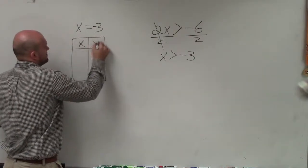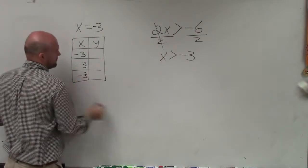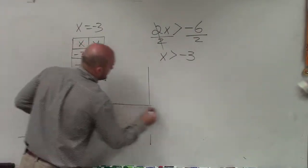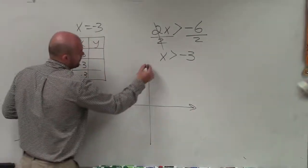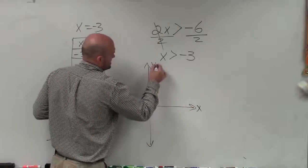When we're creating a table of values, we know that x is always going to equal negative 3. No matter what my value of y is, it's always going to equal negative 3. So we need to determine, well, where is x equal to negative 3? Well, that's on the x-axis. That's the y-axis.